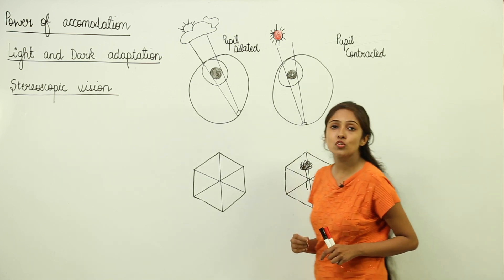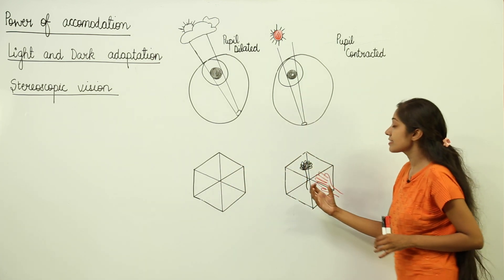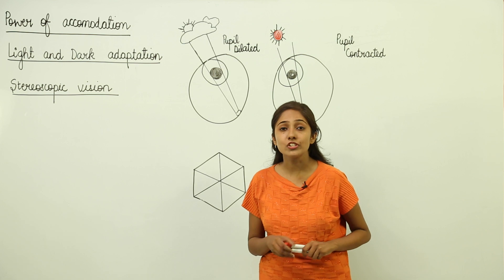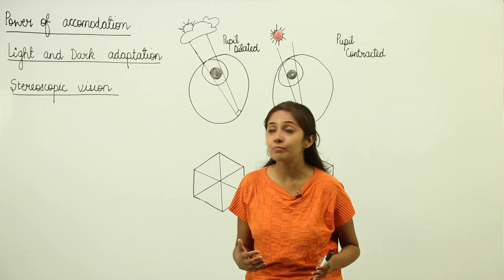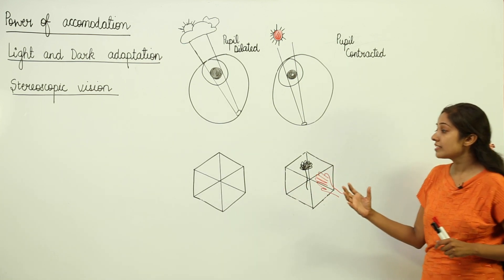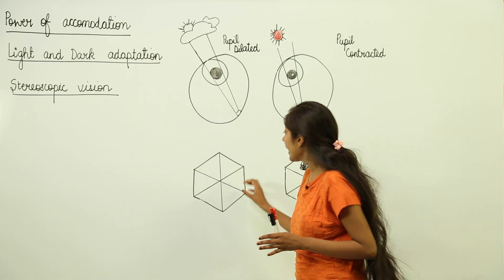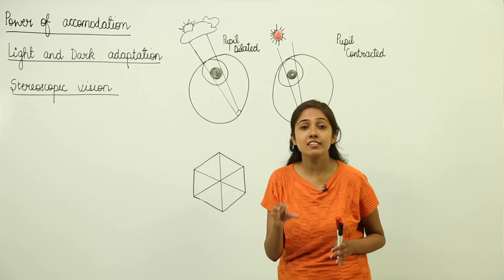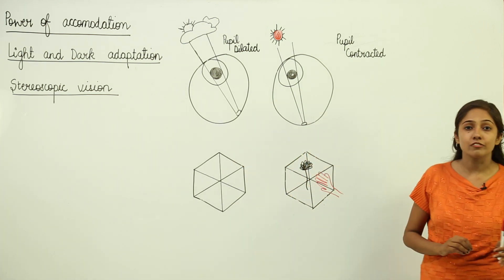Next we have stereoscopic vision, also known as binocular vision. It is present in apes and in human beings. Stereoscopic vision means that you are able to locate and judge distances accurately. It is known as stereoscopic vision or binocular vision.